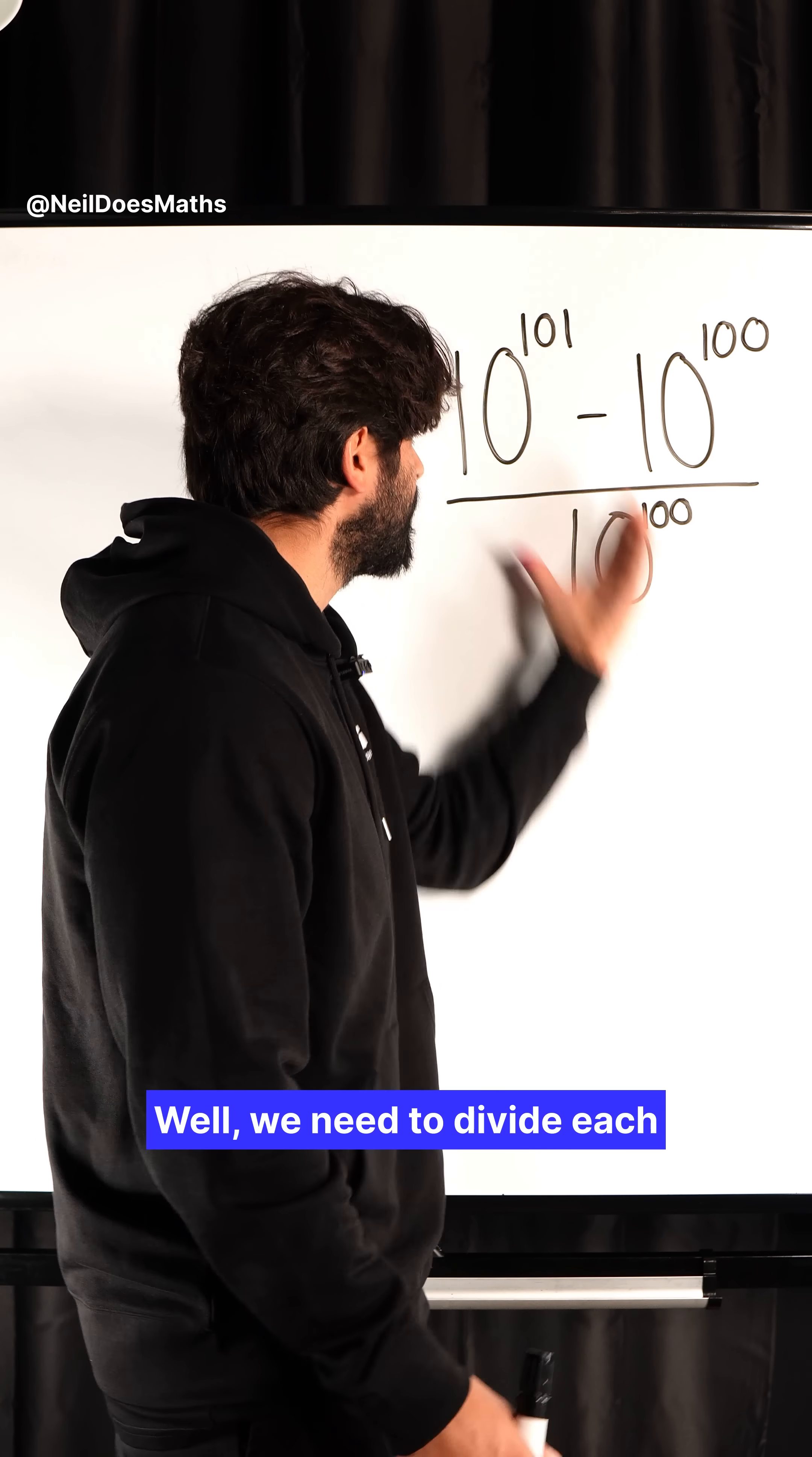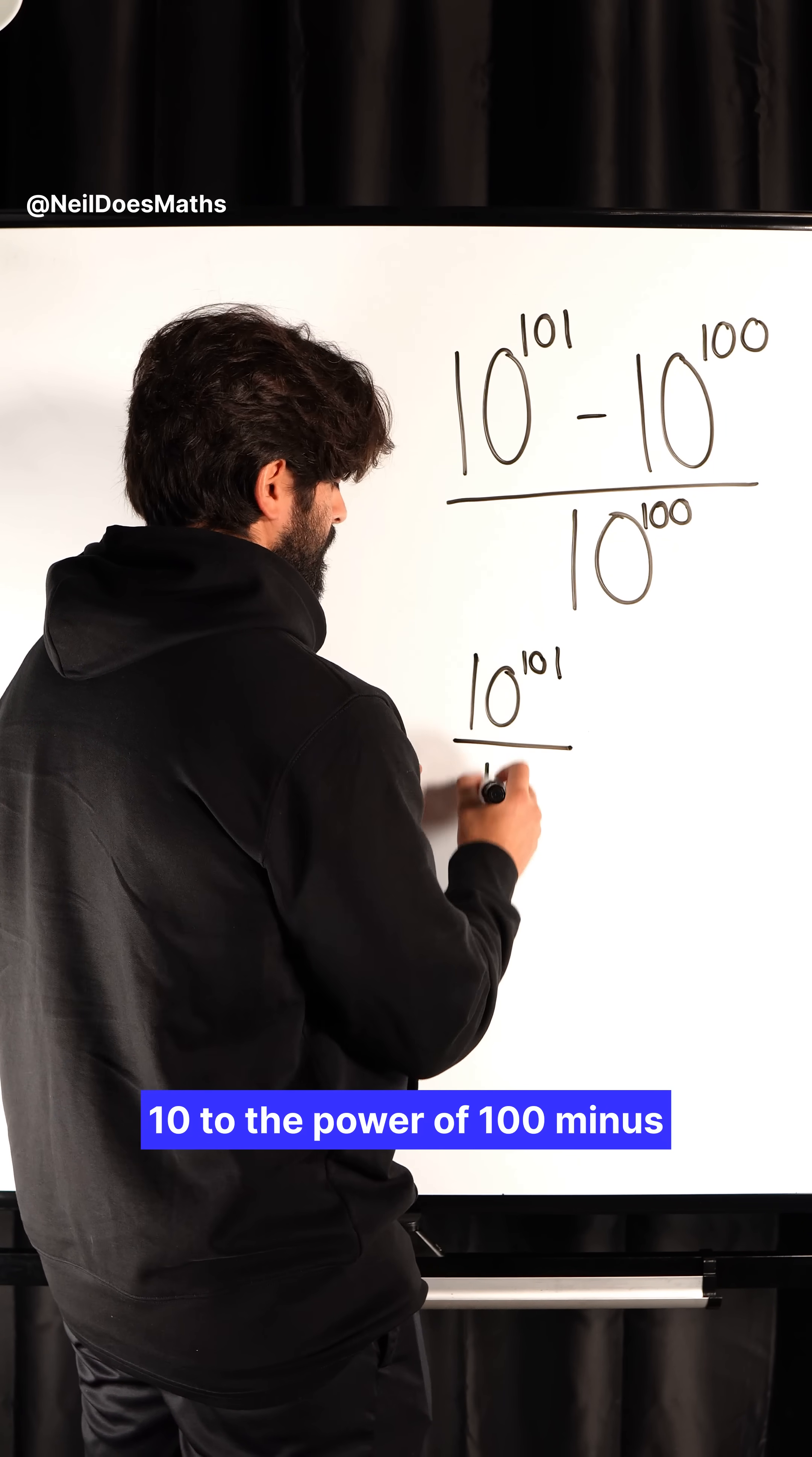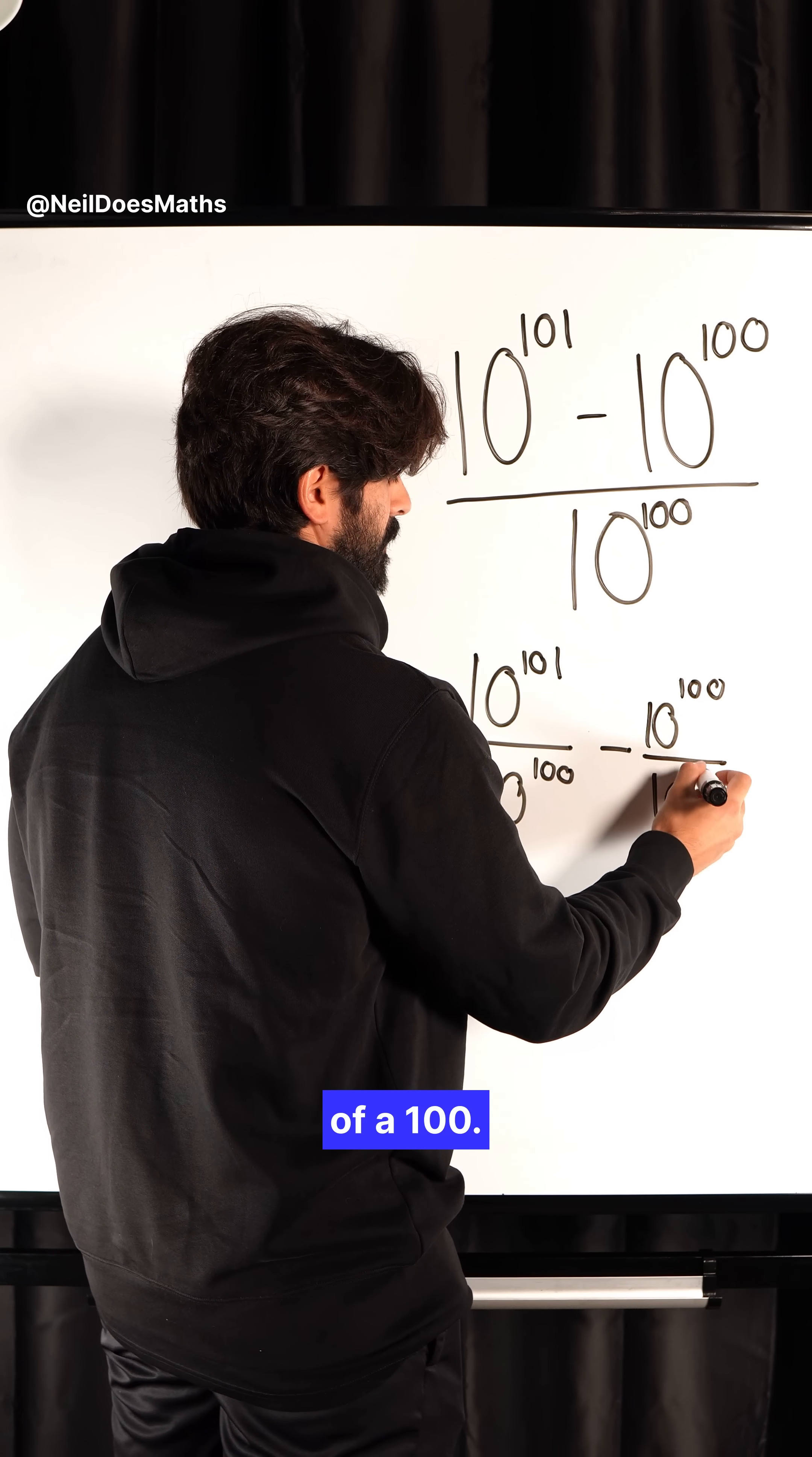Well, we need to divide each term by this single term. So we can rewrite it as 10 to the power of 101 divided by 10 to the power of 100, minus 10 to the power of 100 divided by 10 to the power of 100.